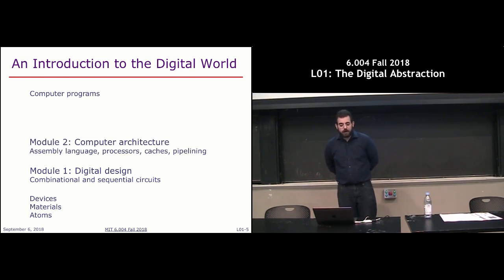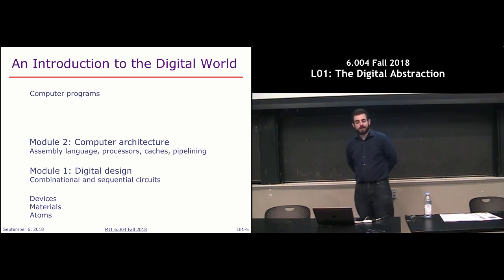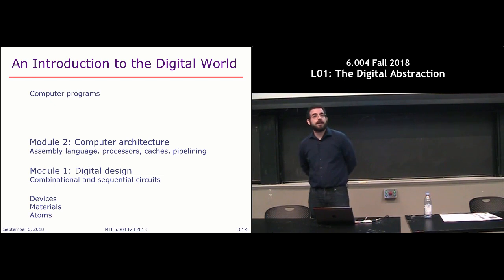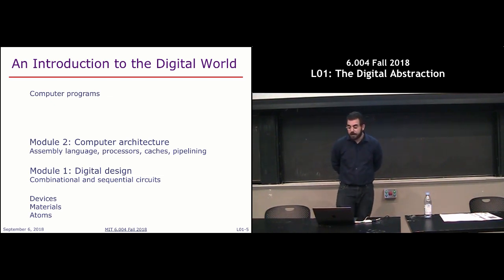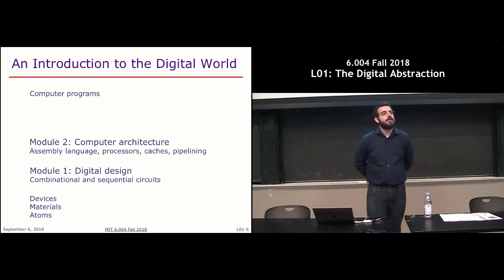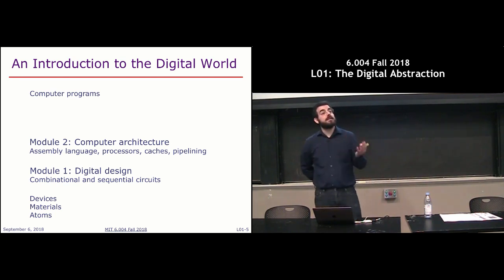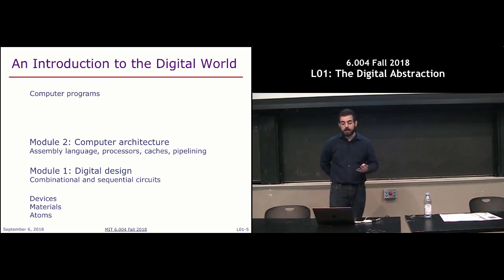Then we'll move on to computer architecture. We'll learn assembly language, which is the language of the computer. We'll learn how to translate computer programs written in high-level languages like Python or C down to assembly language. Then we'll implement a processor — a general-purpose programmable processor — a digital device that executes programs and actually runs your code. Along the way, we'll also talk about the memory hierarchy, pipelining, and how to make these systems go fast.